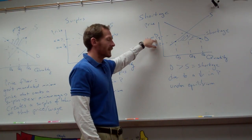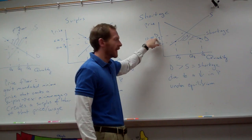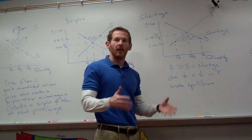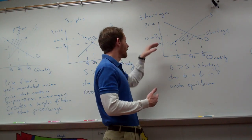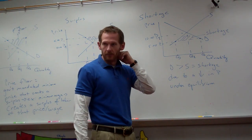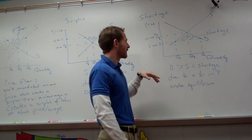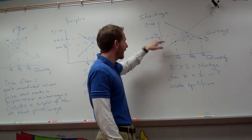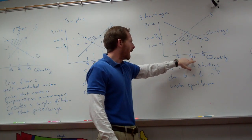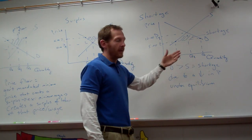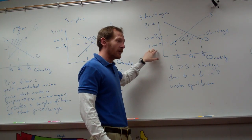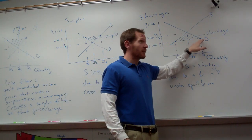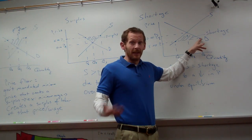Let's say our price equilibrium is $10, and we're at quantity equilibrium. If the price is lowered below equilibrium — let's use tickets as an example — somebody everybody wants to see is charging $10 a ticket, and at that level they'll sell Q sub E tickets. But then they drop the price down to $5. At $5, they're not going to want to perform as much, but now everyone's going to want to watch because it's so cheap.